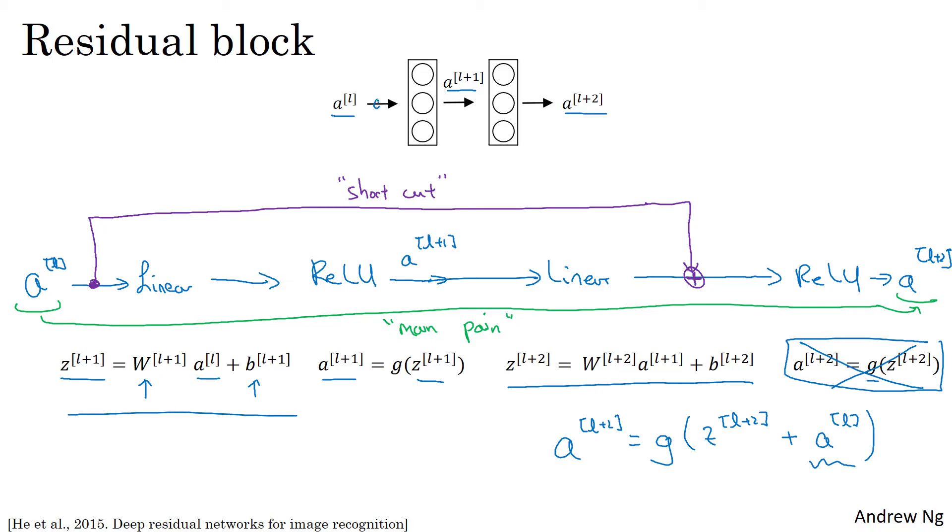And in pictures, you can also modify this picture on top by drawing this extra shortcut to go here. And we're going to draw it as going into this second layer here, because the shortcut is actually added before the ReLU nonlinearity. So each of these nodes here applies a linear function and a ReLU. So AL is being injected after the linear part, but before the ReLU part. And sometimes instead of the term shortcut, you also hear the term skip connection. And that refers to AL just skipping over a layer, or kind of skipping over almost two layers in order to pass this information deeper into the neural network.